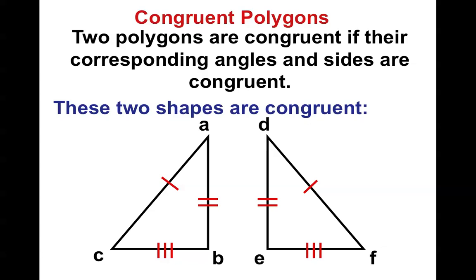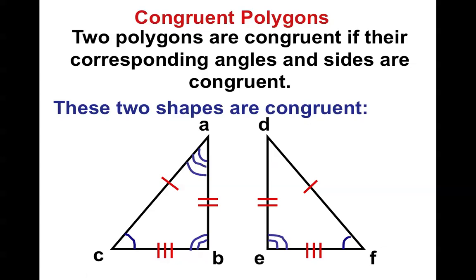We also said the angles had to be congruent. So if I had angle C, which angle would be congruent to that? Well, if you think about here's the hypotenuse and here is the side with the three marks, the corresponding angle would be angle F. If you think about angle B right here, which one would be corresponding? You guessed it — angle E. Which leaves us with angle A and angle D being congruent.